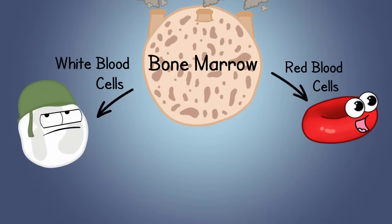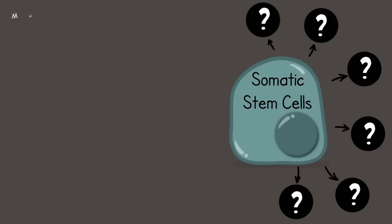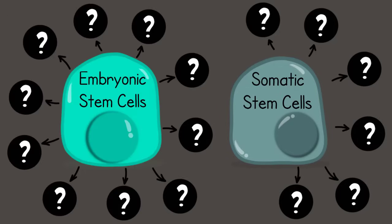Bone marrow contains stem cells that differentiate into different types of blood cells. Many, but not all, of the somatic stem cells found in your body are considered to be multipotent — meaning they can become many types of cells, but not as many as embryonic stem cells.